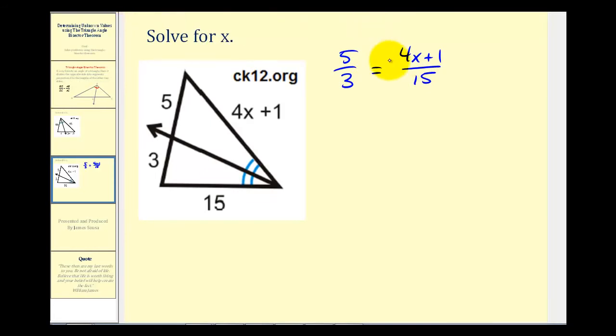So now we can cross multiply. 3 times 4X plus 1 must equal 5 times 15, that's 75. Now we'll distribute and solve for X. So we'll have 12X plus 3 equals 75.